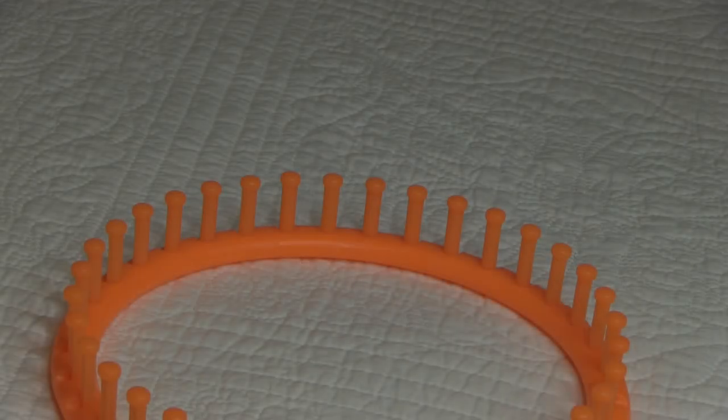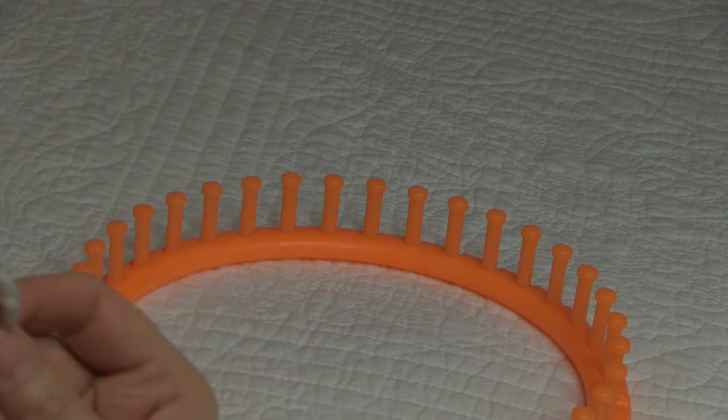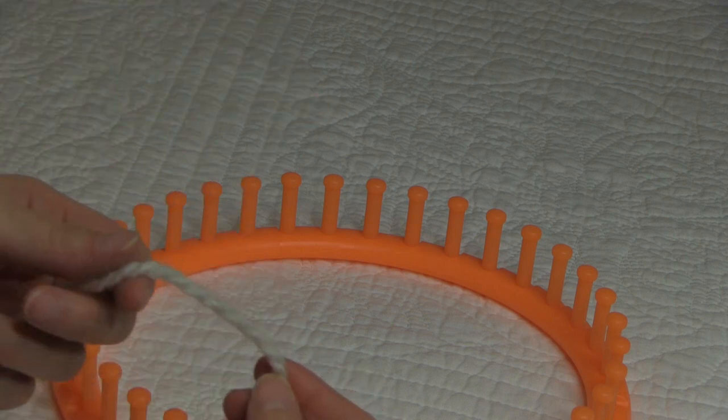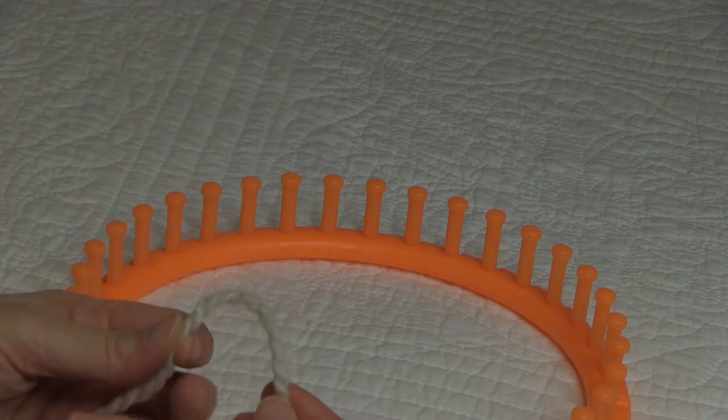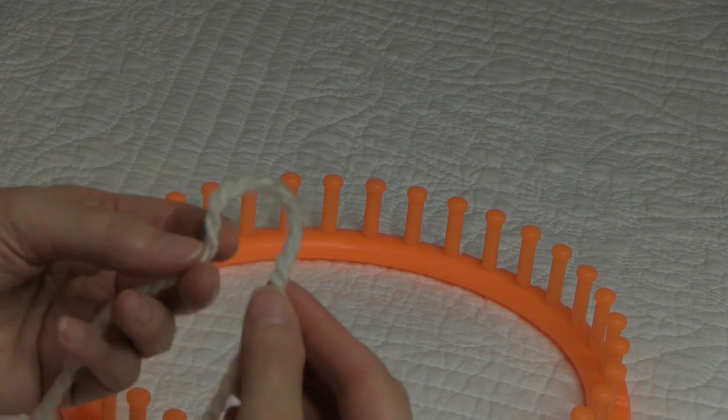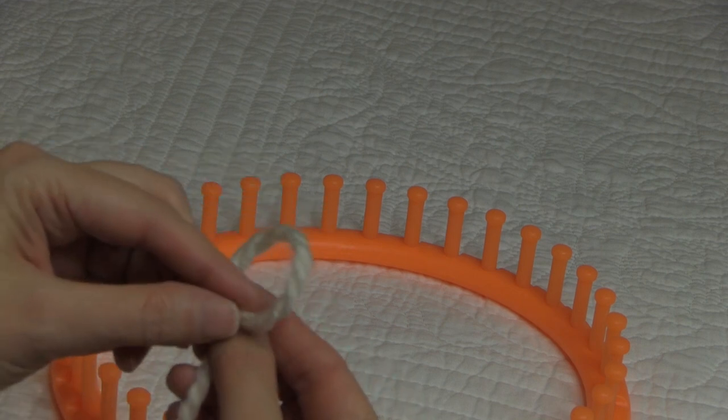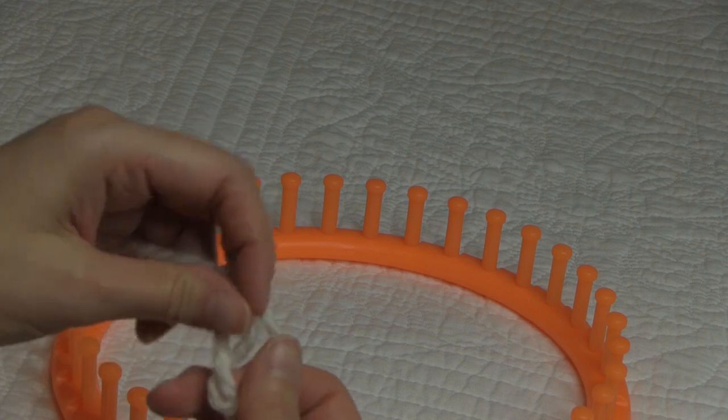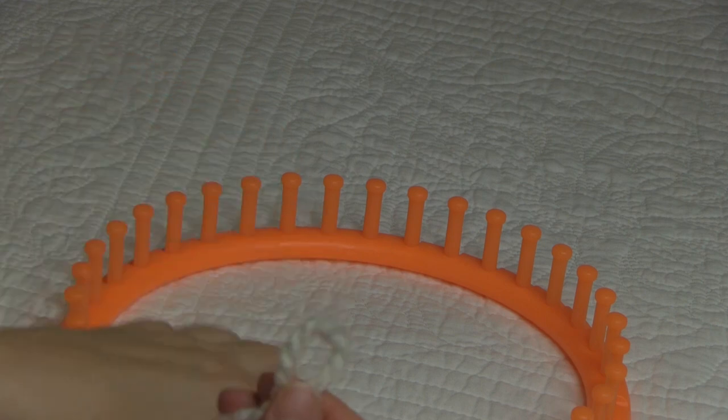To begin our hat, I'm going to use a cast on called the double e-wrap method. You can use whatever cast on you feel more comfortable with. To do our double e-wrap cast on, we're going to make a slip knot and place that on our anchor peg.